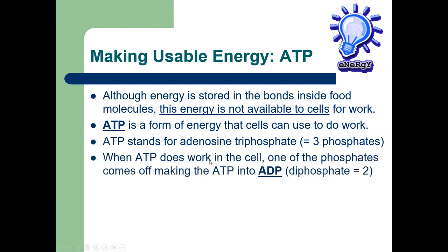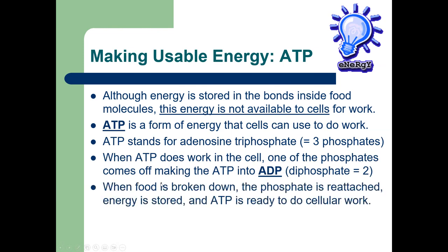When ATP does work in the cell, one of the phosphates detaches, turning ATP into ADP — diphosphate, 'di' meaning two. Think of ATP as a charged rechargeable battery and ADP as a dead one. When food is broken down, the phosphate is reattached — like a battery being re-energized — and ATP is ready to do cellular work again. Respiration is essentially breaking down food so that phosphate reattaches to ADP, making it triphosphate — the charged-up form.